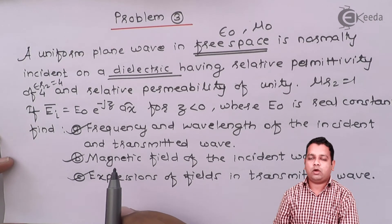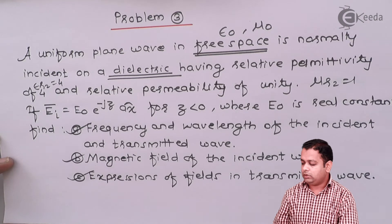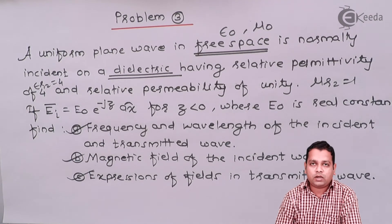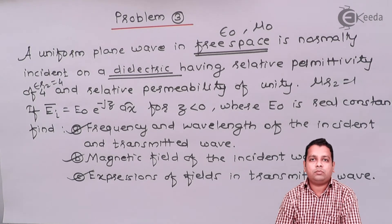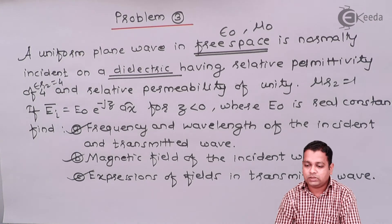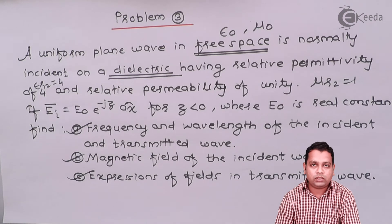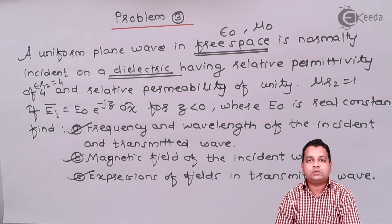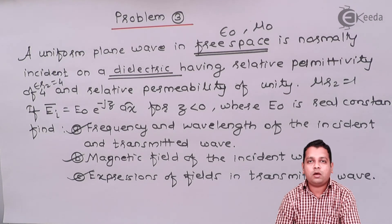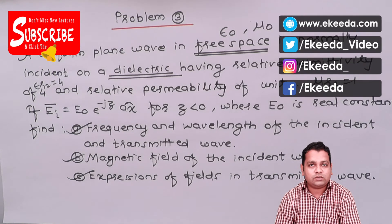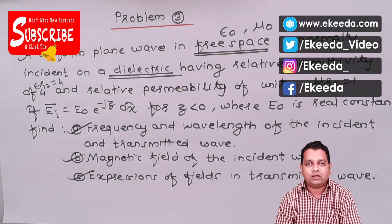So parts A, B and C have been solved for problem number 3. I hope you have understood the reflection of electromagnetic wave by a perfect dielectric medium at normal incidence by practicing problems 1, 2 and 3. In the next video, we shall be starting with the new topic: the reflection of a uniform plane wave by a perfect conductor at normal incidence. For more on electromagnetic field theory, you can subscribe to the Ikeda channel. Thank you.